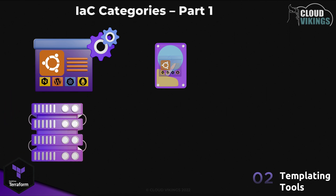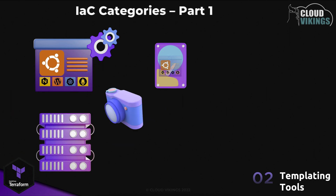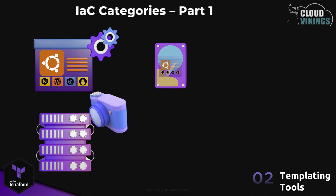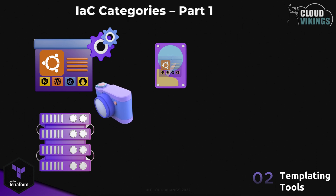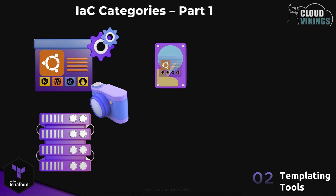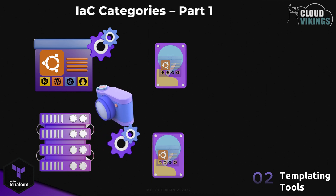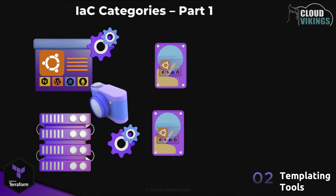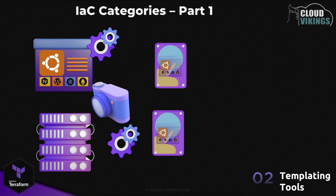Some templating tools also let you take snapshots of an existing system. If you have a server or virtual machine configured in a perfect end state and need to create more copies, this is a good way to create a snapshot of that current state. The tool will take that and create an image file for you, which you can then use to deploy any number of additional VMs or containers.